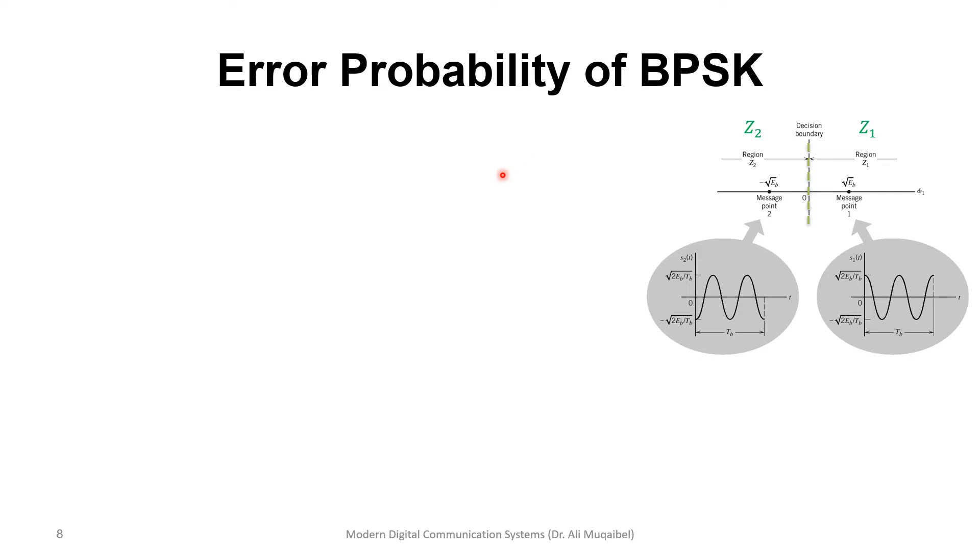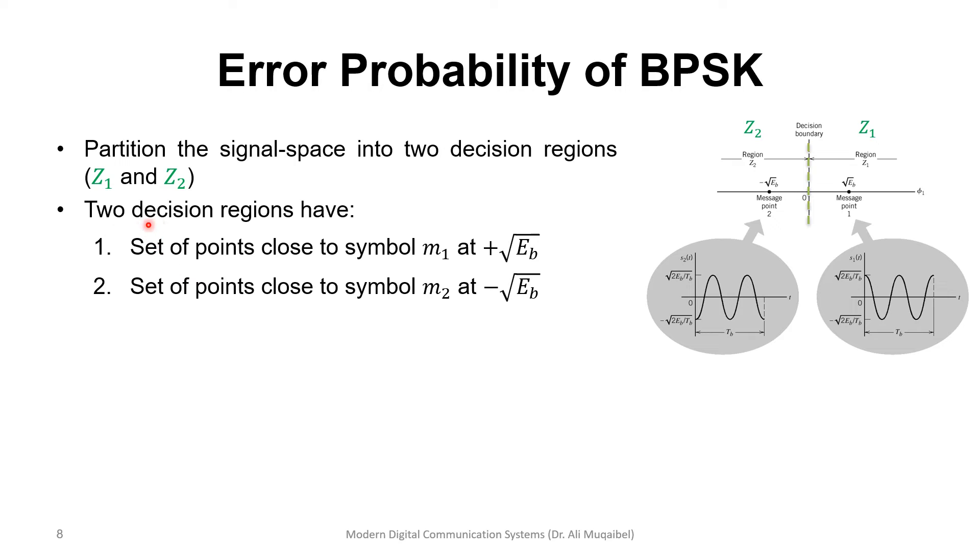Now, if you want to do the error probability of the binary phase shift keying, then we have, we kind of have done this before in baseband communication. The only difference is now we have bases that are cosine and minus cosine. But similarly, if we split the region into two parts, and then we have two decision regions, all points that are close to M1 or this signal will be closer to this point, square root of Eb. And all points on this side of the spectrum of the region would be demodulated as minus square root of Eb, which is transmission of zero, S2.